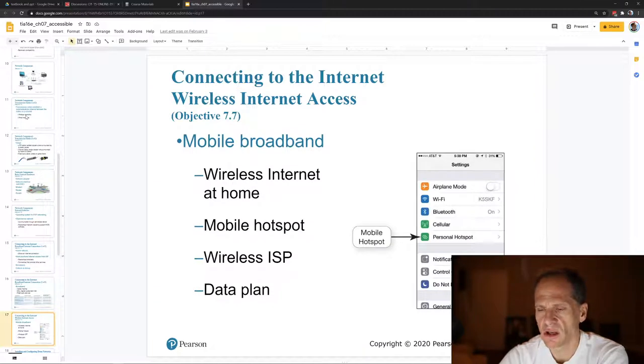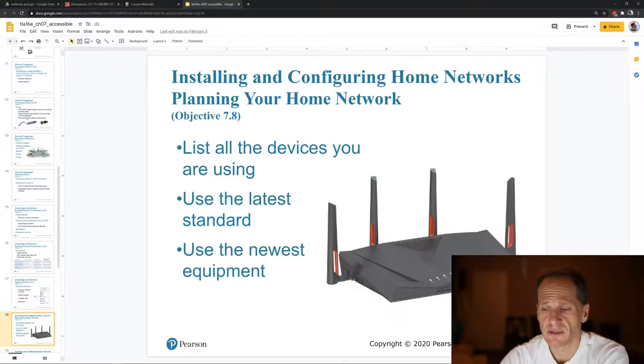And you can use your cell phone to get internet access because you have internet access on your cell phone. So you can set up a personal hotspot. And then that allows you to connect devices to your phone and use the internet access through your phone. So that's a nice little nifty trick.